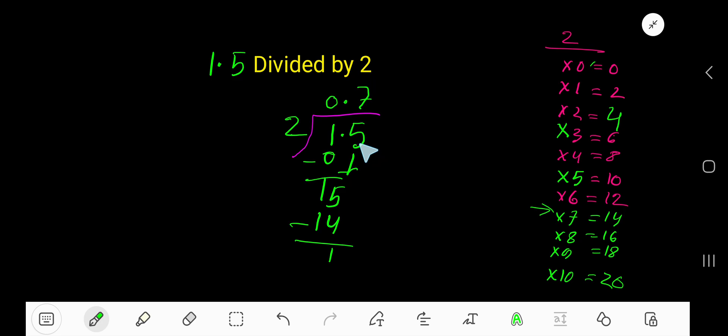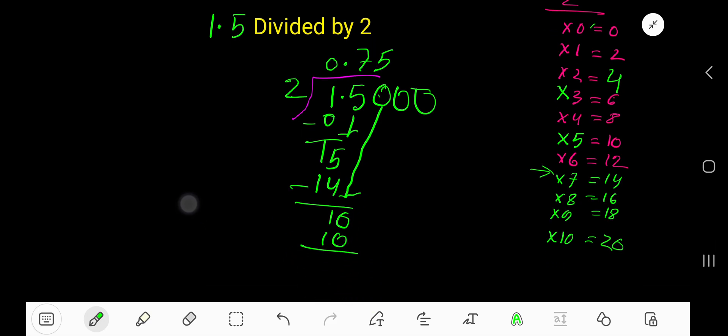This is a decimal number, so you can add any number of trailing zeros. Bring down the first 0. 2 goes into 10 how many times? 5 times. 5 times 2 is 10, subtract to get 0. Since the remainder is 0, we are done. So 0.75 is our answer.